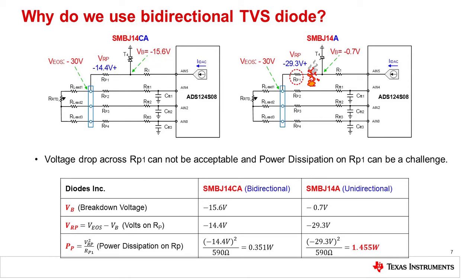One more question you may ask is why do we select a bidirectional TVS diode instead of a unidirectional TVS diode in this application? Since the maximum input voltage rating on the ADS124S08 is only minus 0.3 volts to 5.5 volts, it looks like a unidirectional TVS diode is the natural choice for protection. However, this choice will lead to excessive power dissipation in the RP1 resistor during a negative input voltage fault event. The reason is that with a negative input signal, the unipolar TVS will go into a forward bias state and drop about 0.7 volts. Thus, the diode will drop 0.7 volts and the remainder of the voltage will drop across the RP1 resistor. For the unipolar device, the power dissipation is 1.455 watts, and for the bipolar device, it is only 0.351 watts. Based on the rule of thumb for power resistors, a 3 watt resistor would be required for the unipolar TVS. The bipolar TVS power calculations are the same for both positive and negative polarities of input faults.